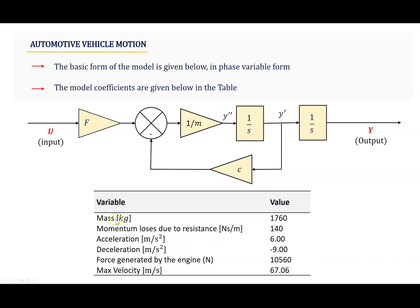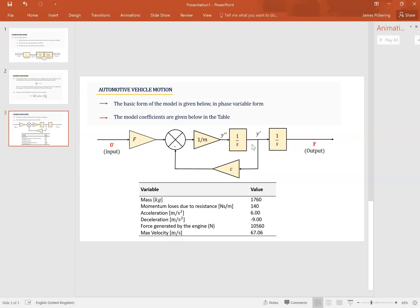The coefficients of the model are: mass is 1760 kilograms, c is the momentum loss due to resistance for acceleration and deceleration, force generated by the engine is determined based on mass multiplied by acceleration, and we also have the maximum velocity of the vehicle. We'll use a signal builder and saturation blocks to limit the maximum velocity and acceleration.